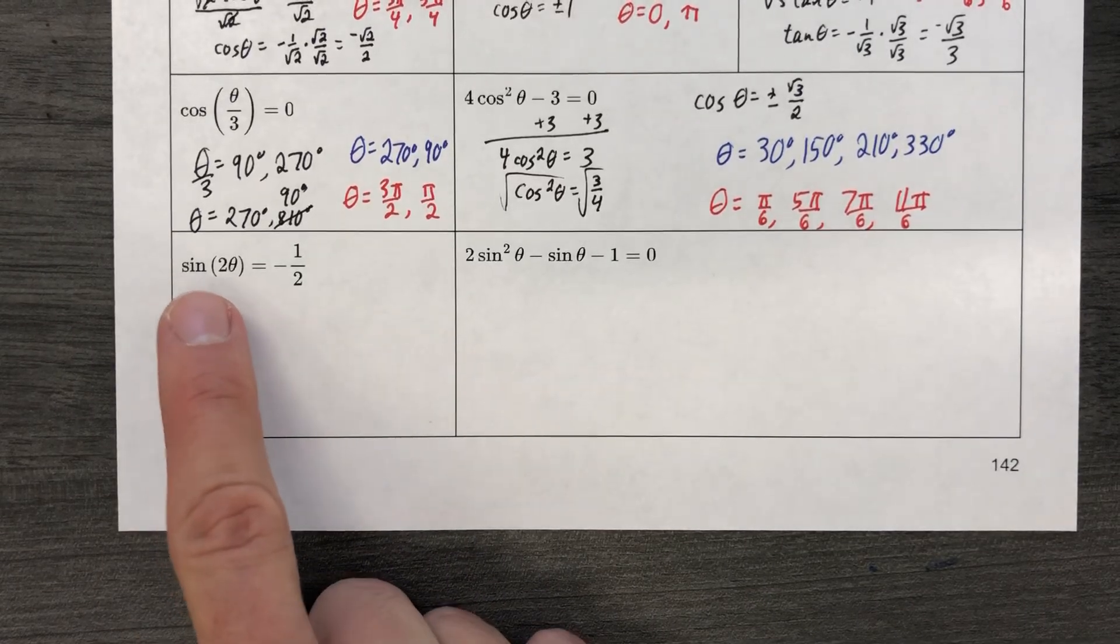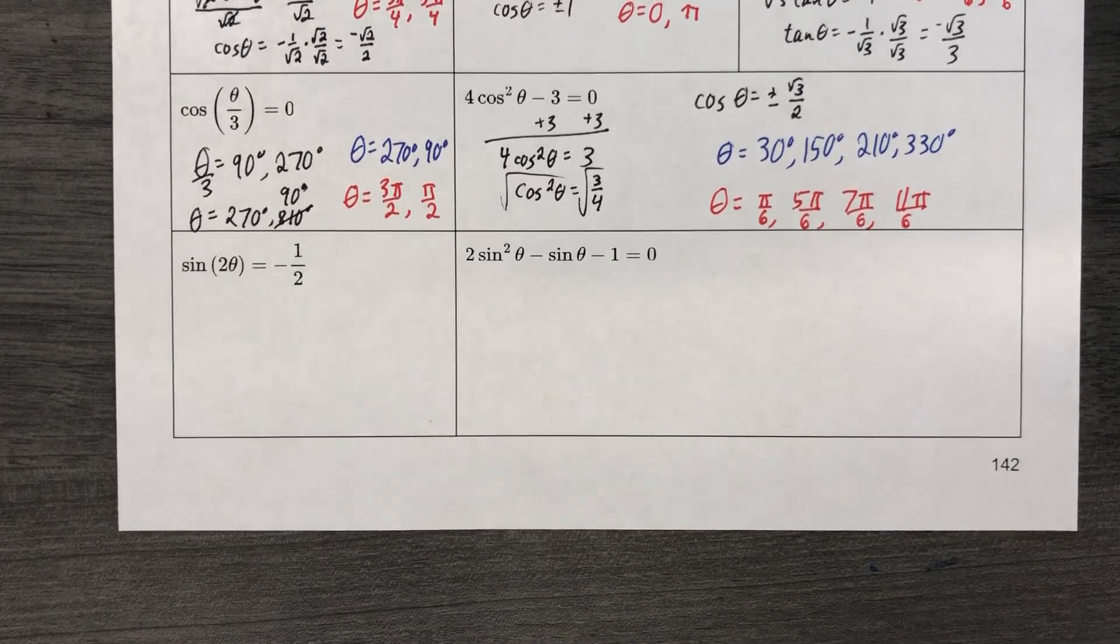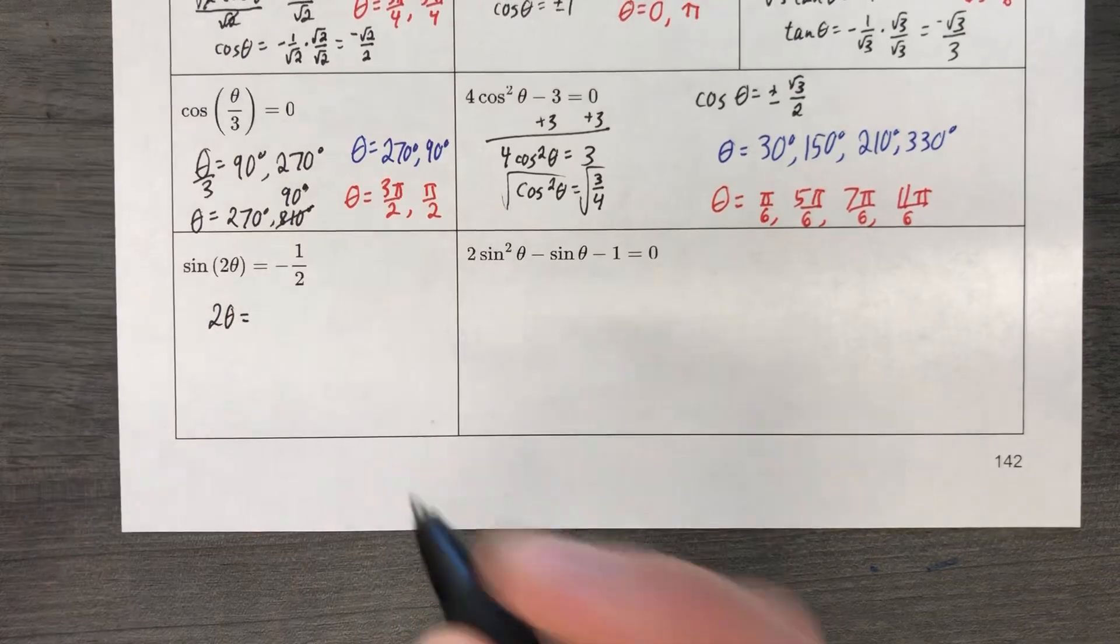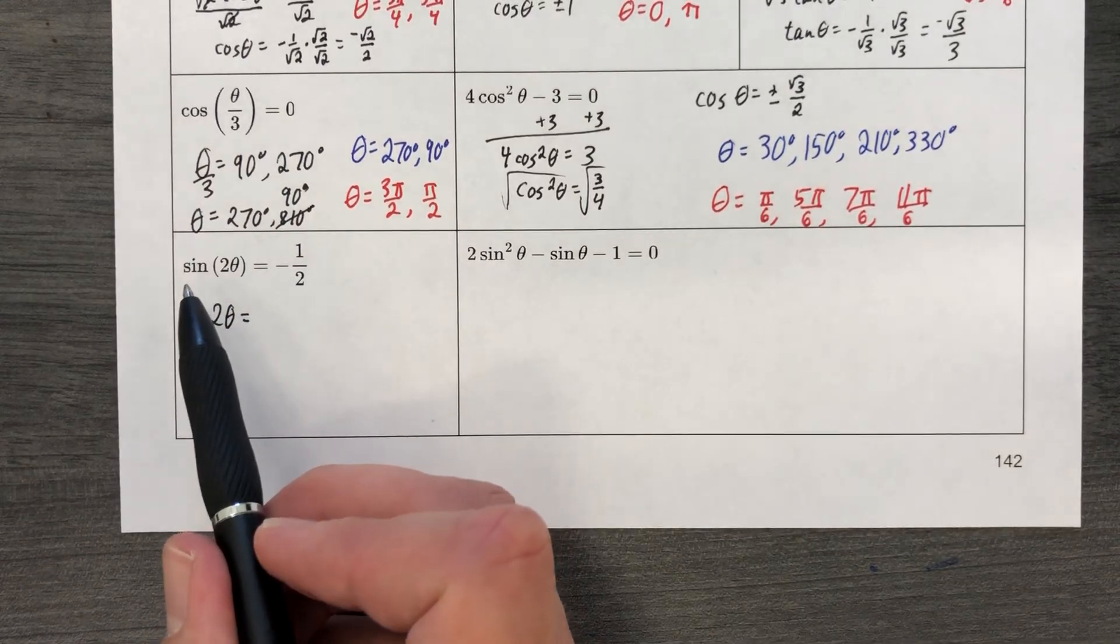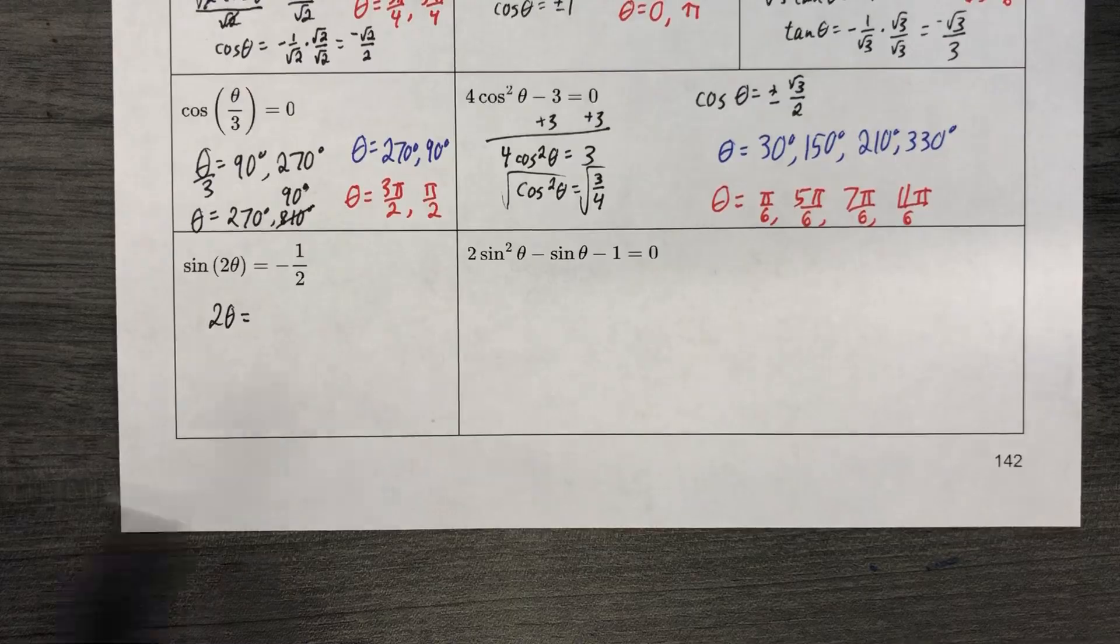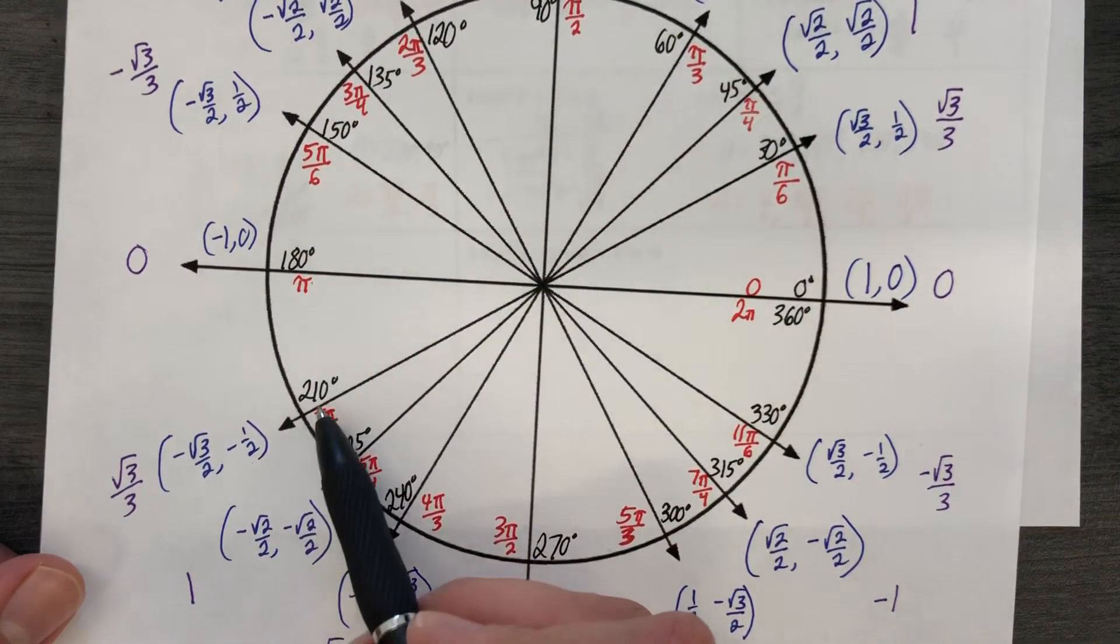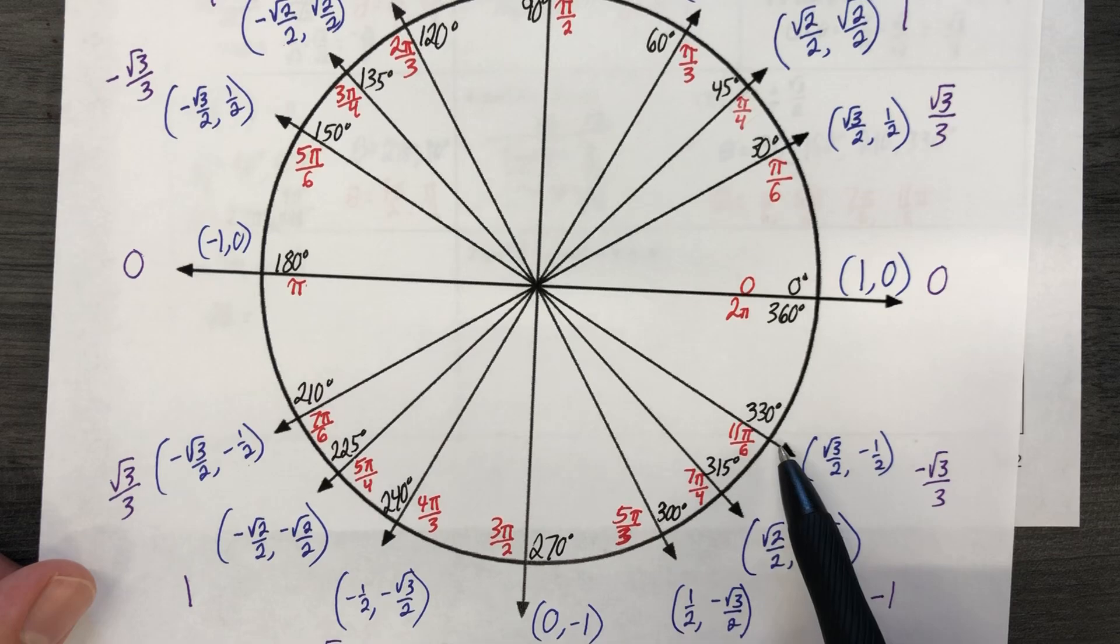We have sine all by itself. There's something more complicated in the parentheses, but we'll deal with that later. Let's just go ahead and write 2 theta equals. For what angle measurements is the y value equal to negative one-half? The y value is equal to negative one-half at 210 and at 330.